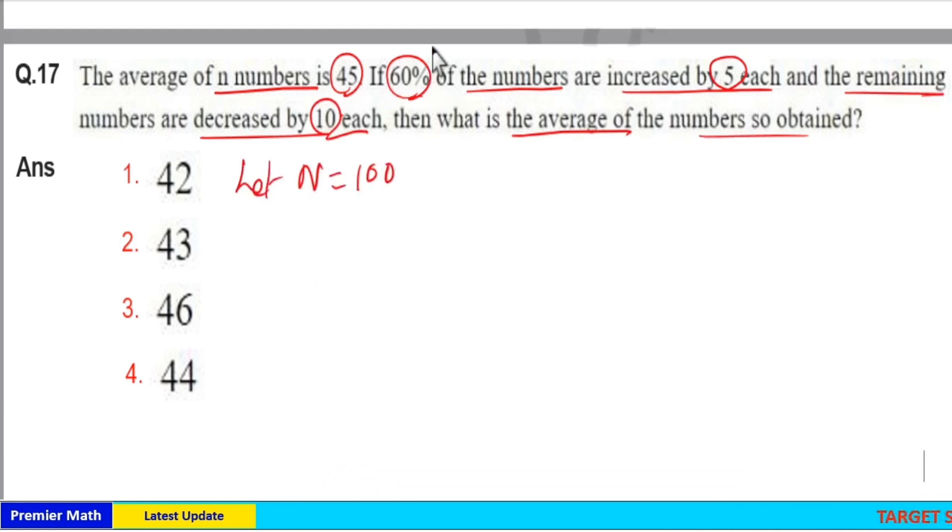Then 60% means 60 numbers, remaining numbers means 40 numbers. So total increment here is equal to 60% of numbers increased by 5, which means 60 into 5, total 300 is the increment.